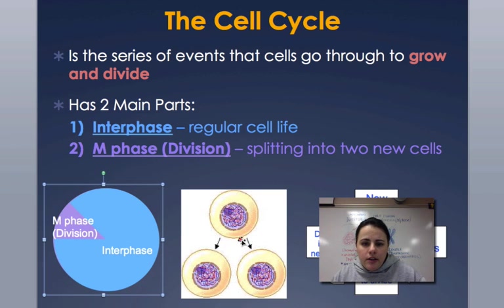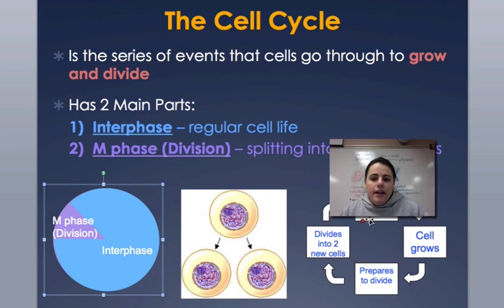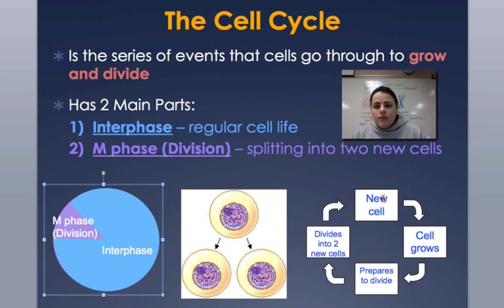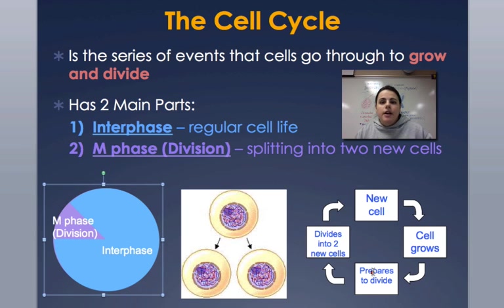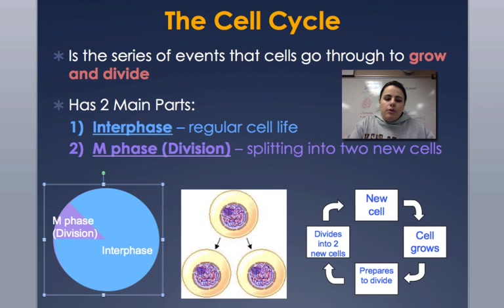So we're going to go from one cell into two cells. The whole process is: we have a cell, it's going to grow, it's going to mature, it's going to get the signal that it has to divide to make more, then it's going to prepare to do that, and then it's actually going to divide, and each one of those two new cells is going to start the whole cell cycle all over again. So let's talk about interphase and how it's split up into more than one section.